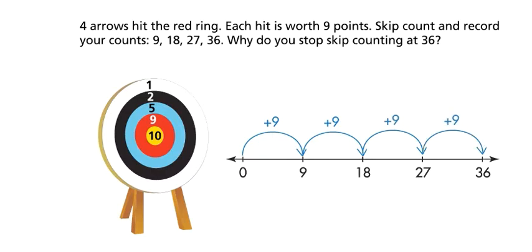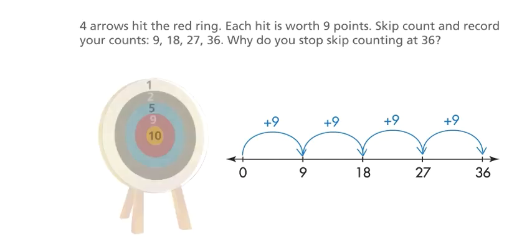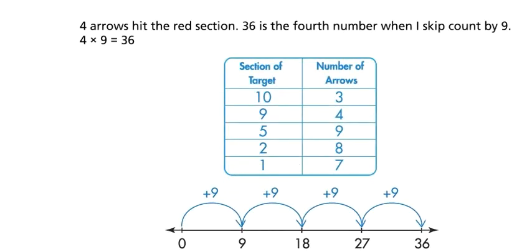Why do you stop skip counting at thirty-six? Four arrows hit the red section. Thirty-six is the fourth number when I skip count by nine. Four times nine equals thirty-six.